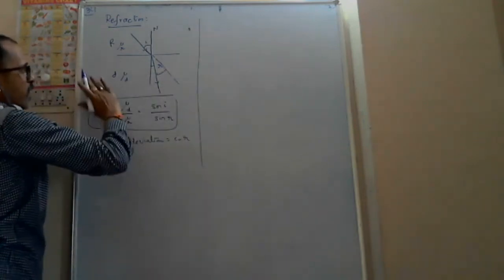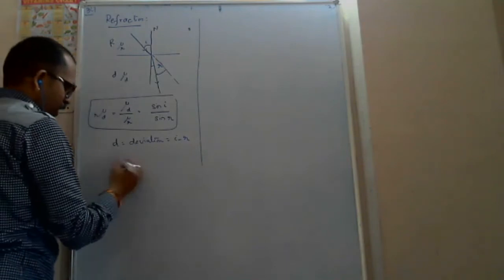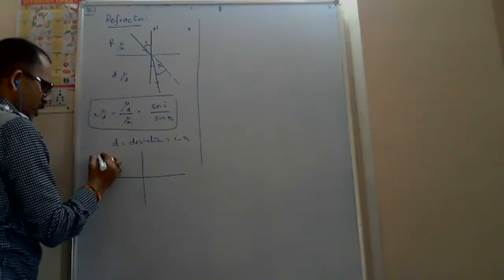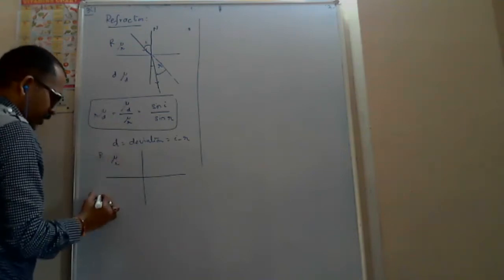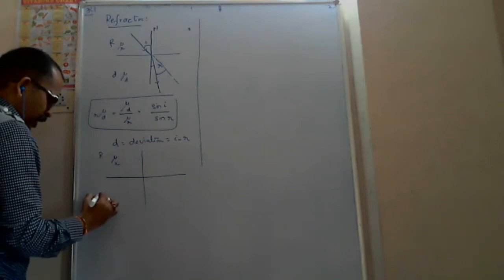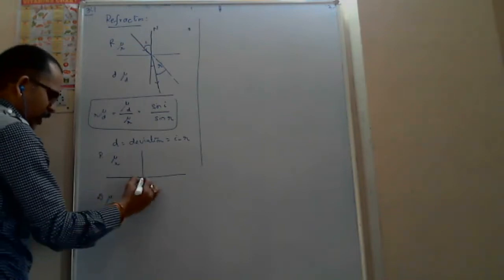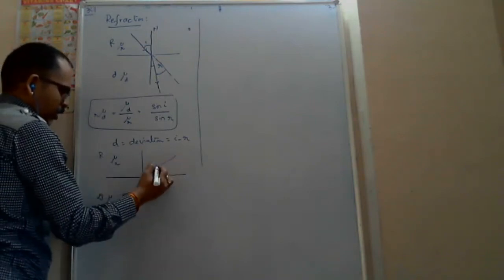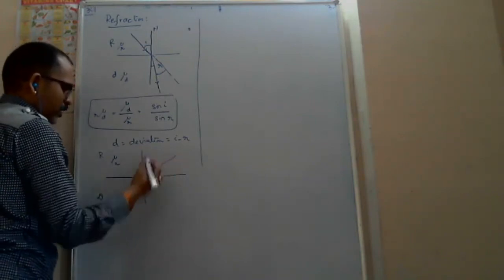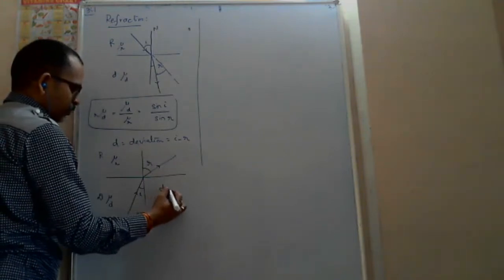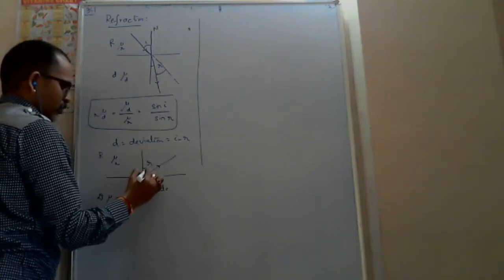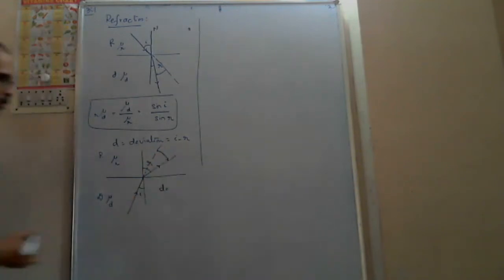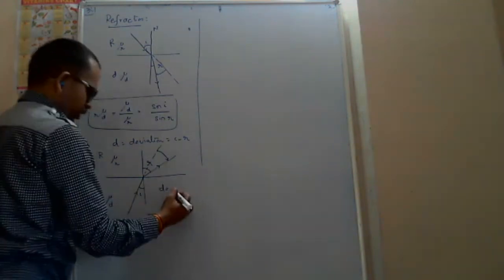This is the case where light enters from rarer to denser. If light enters from denser to rarer — suppose mu-R and mu-D — then the light bends away from the normal. In this case, the deviation is r minus i.